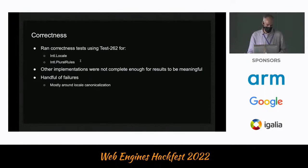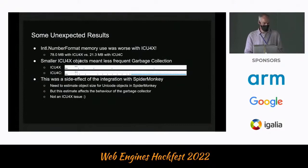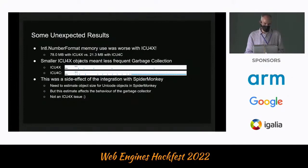Locale canonicalization is basically edge cases on top of edge cases — handling things like what regions emerged from the breakup of the Soviet Union. It's part of the standard and needs to be done right, but it is kind of an edge case. We did see a few unexpected results: when working on number format, memory use was substantially worse with ICU4X. When we dug into it, we saw that because ICU4X objects were smaller, they were being garbage collected less frequently — a side effect of our integration with SpiderMonkey where we had to estimate object sizes, which changed the behavior of the garbage collector. So it wasn't a problem with ICU4X, but it demonstrates how you have to be careful running these kinds of benchmarks.